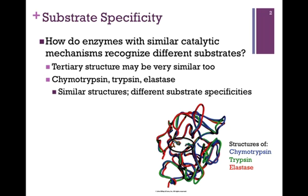Even the tertiary structure may be very similar. We're going to consider, in particular, the case of chymotrypsin, trypsin, and elastase. They all catalyze the same reaction — hydrolysis of a peptide bond — and in fact their structures are very similar, as illustrated by the backbone trace at the bottom of the slide here. Chymotrypsin is highlighted in blue, trypsin in green, and elastase in red. As you can see, very similar.